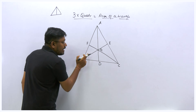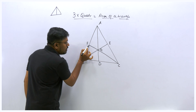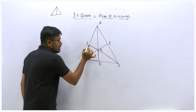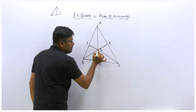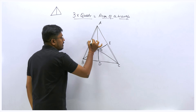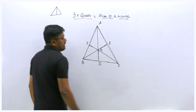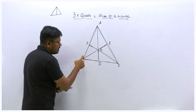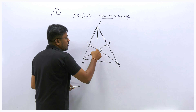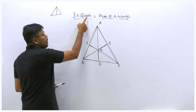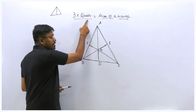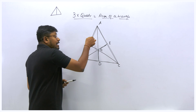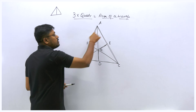Another important thing: after drawing three medians, you can see three quadrilaterals are formed. This is one quadrilateral, this will be another quadrilateral, and this will be the third quadrilateral. Only because of this, they write the formula: three quadrilateral area equals area of a triangle. Because when you join the three quadrilaterals, it becomes the complete area of the triangle.